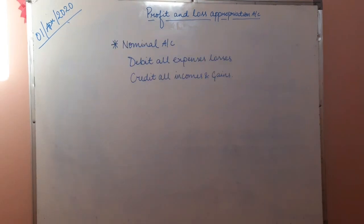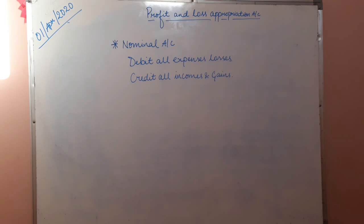Now talking about some features of Profit and Loss Appropriation Account: the first feature is that it is a nominal account. A nominal account, which you studied in class 11th, is related to expenses and income. The rule followed is: debit all expenses and losses, credit all income and gains. Many students are confused when preparing this account, but if you know the rules of any account type, you can easily get the entries right.